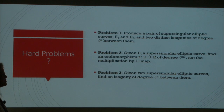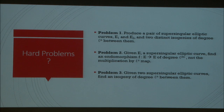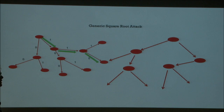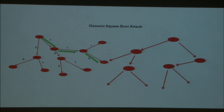Problem 3 is, given two supersingular elliptic curves, to find an isogeny of degree L to the N between them — that's just the pathfinding problem I mentioned yesterday. The best known attacks on this problem generically right now are these square root attacks. Because Tony will talk more about square root attacks on Thursday, I'll just give you the idea. In Pollard Rho, you can think of it as taking a random walk — just like the birthday paradox, you expect to get a collision within roughly the square root of the size of the group.